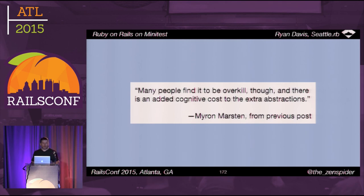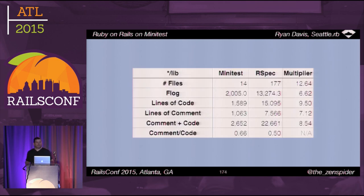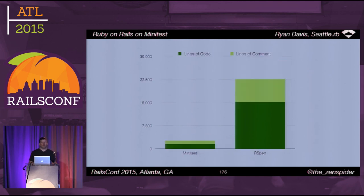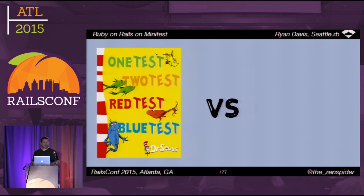From Myron's post, he said many people find it to be overkill and there is an added cognitive cost to these extra abstractions. Here are the raw numbers of that added cognitive cost — we'll visualize them. Flog is a complexity metric proportional to how hard something is to test, debug, or understand. On that metric, RSpec is 6.6 times bigger than Minitest. On combined code plus comments — basically how much you have to read to understand each library — RSpec is 8.5 times bigger. It's akin to reading Dr. Seuss versus James Joyce.